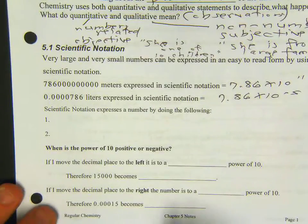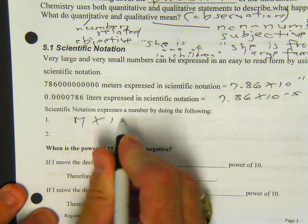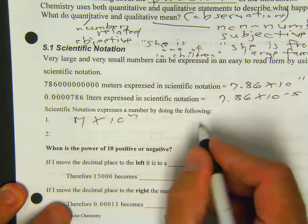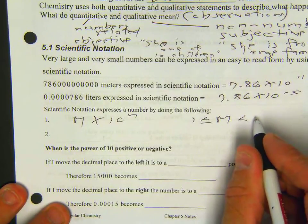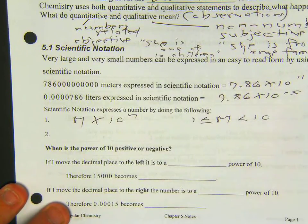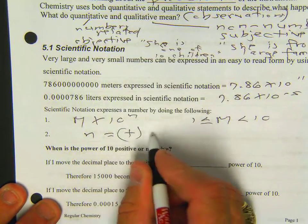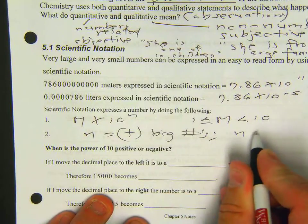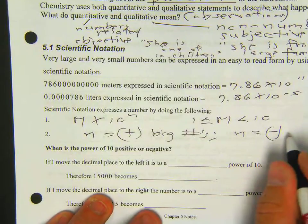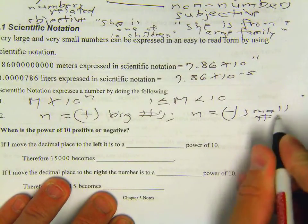And scientific notation basically expresses the following: m times 10 to the nth, where 1 is less than or equal to m is less than 10. And n is positive for big numbers. And n is negative for small numbers.